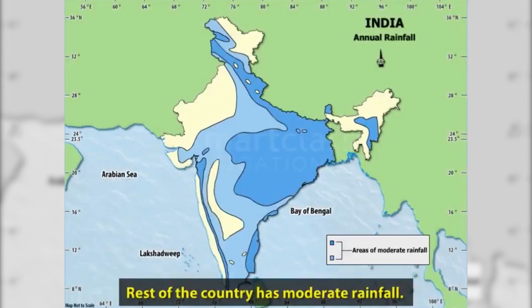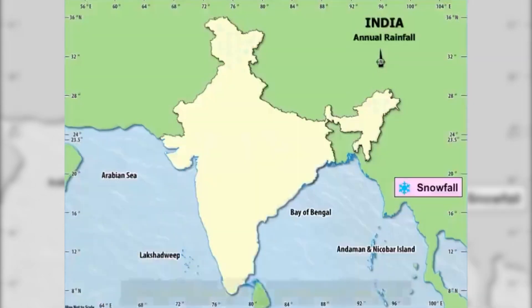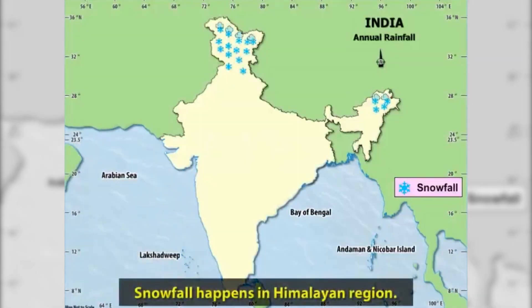The rest of the country has moderate rainfall. Snowfall happens in the Himalayan region.